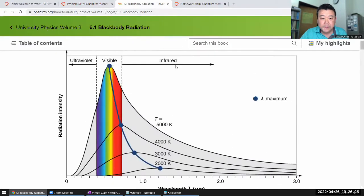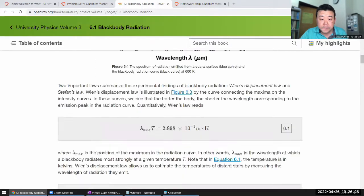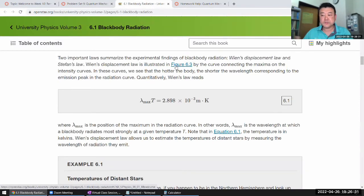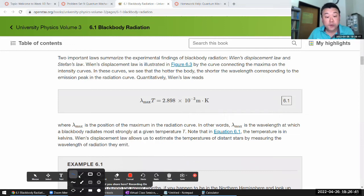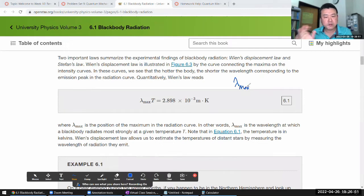Yeah, so that is Wien's displacement law. It's an experimental law, not something that was theoretically derived, although it can be theoretically derived once you have Planck's law. But for us we'll just write it down. It's expressing the inverse proportionality between temperature of a blackbody and the wavelength at which the maximum emission happens. When you multiply them it's a constant: 2.898 times 10 to the minus 3 meter wavelength times Kelvin.